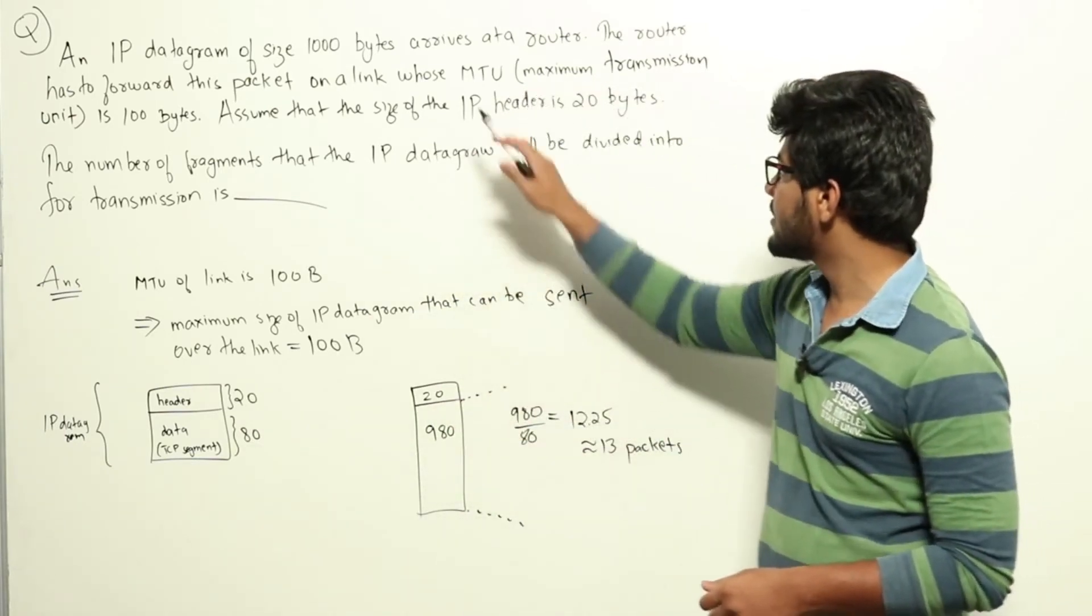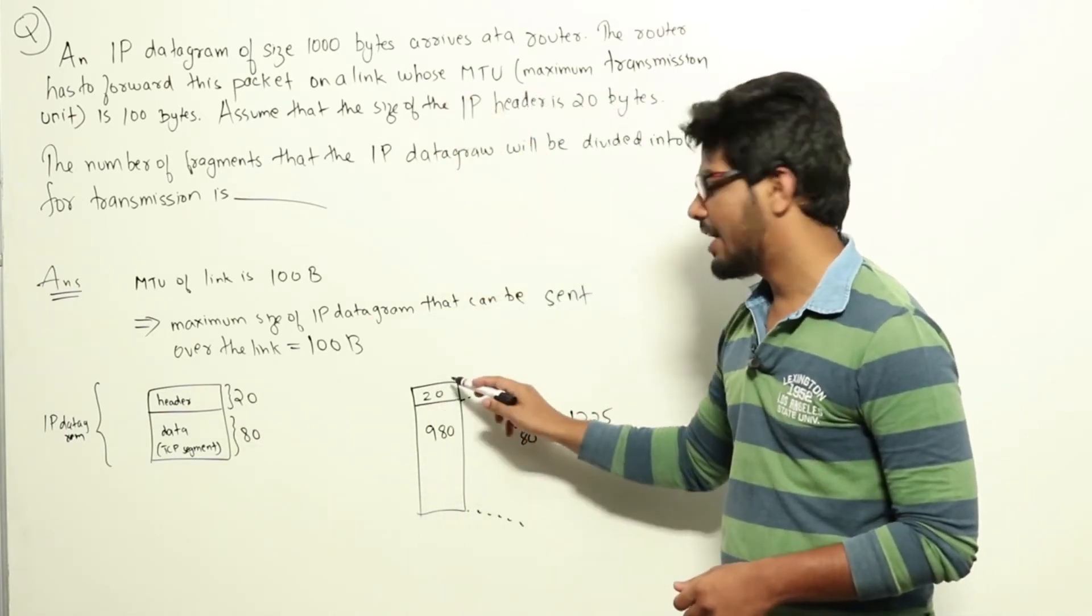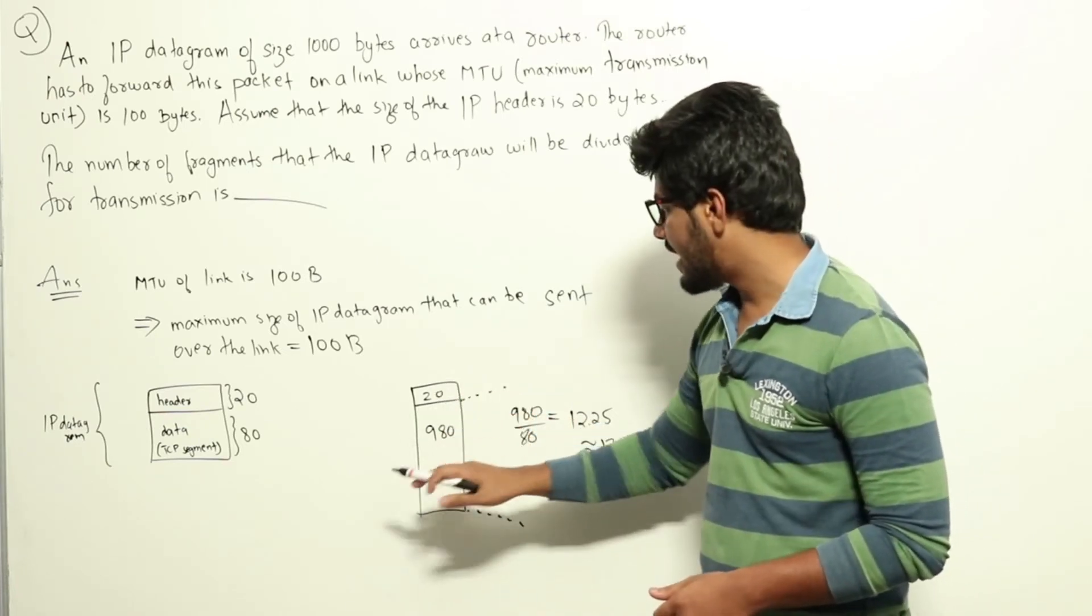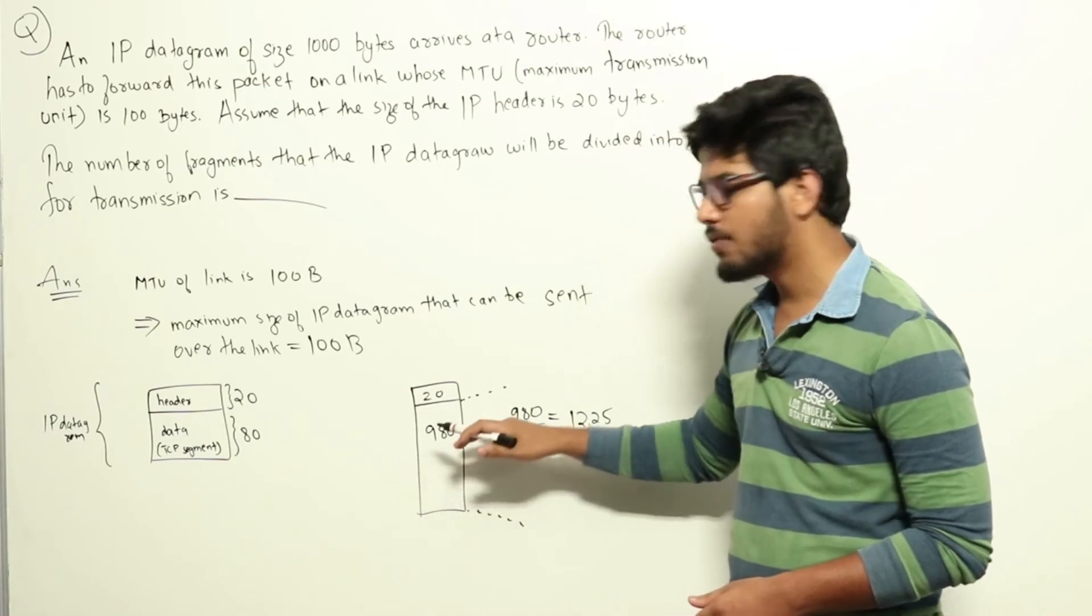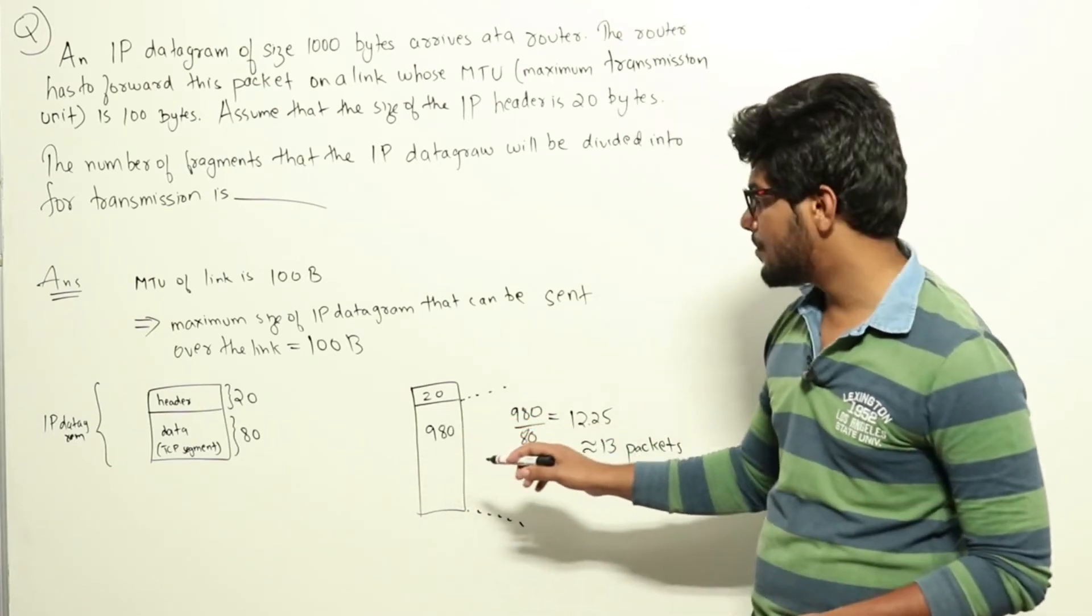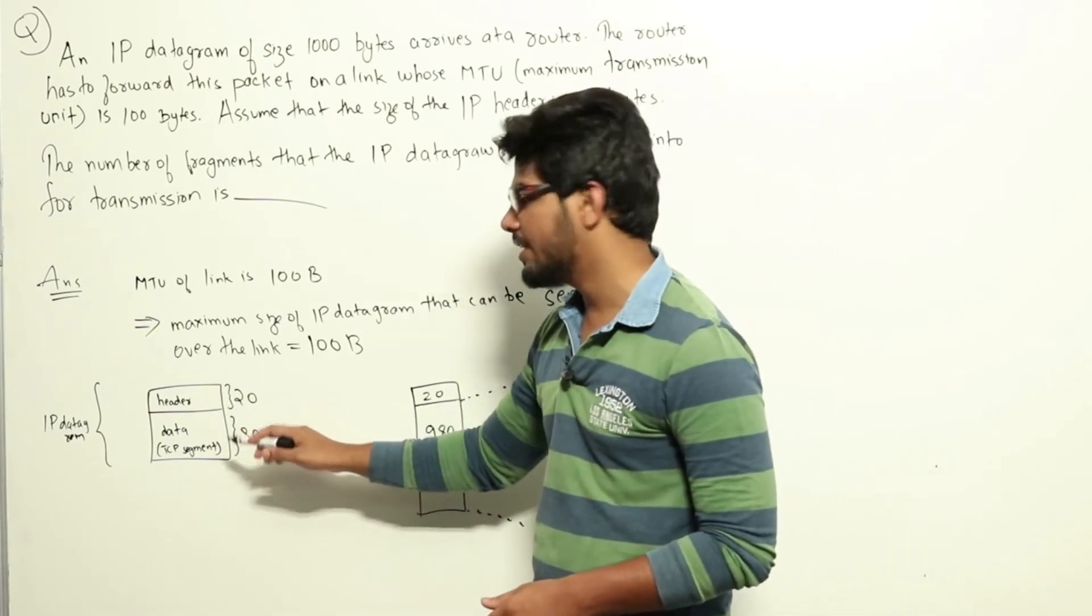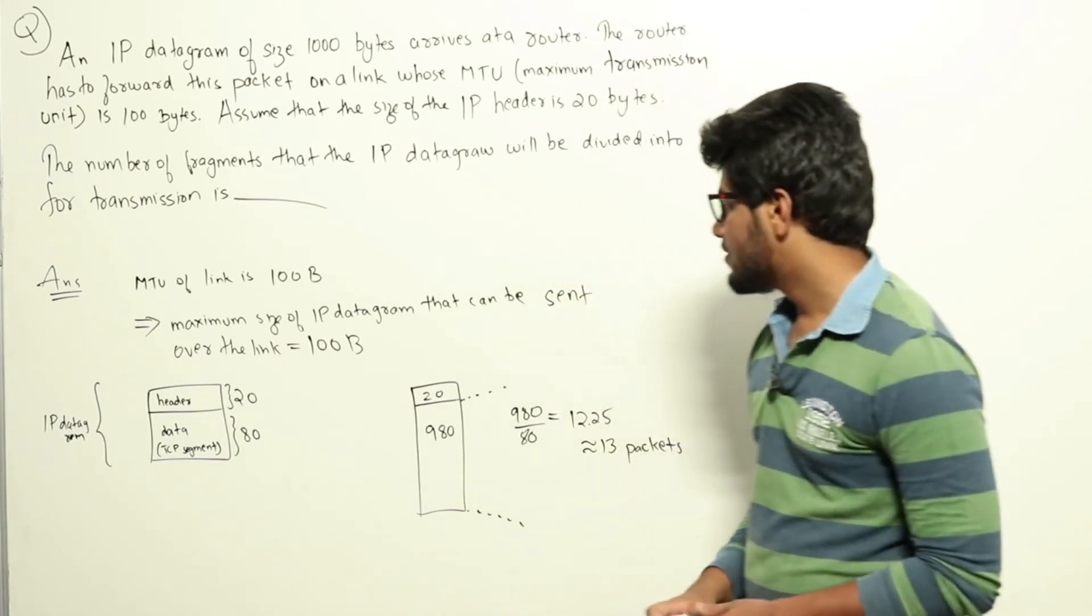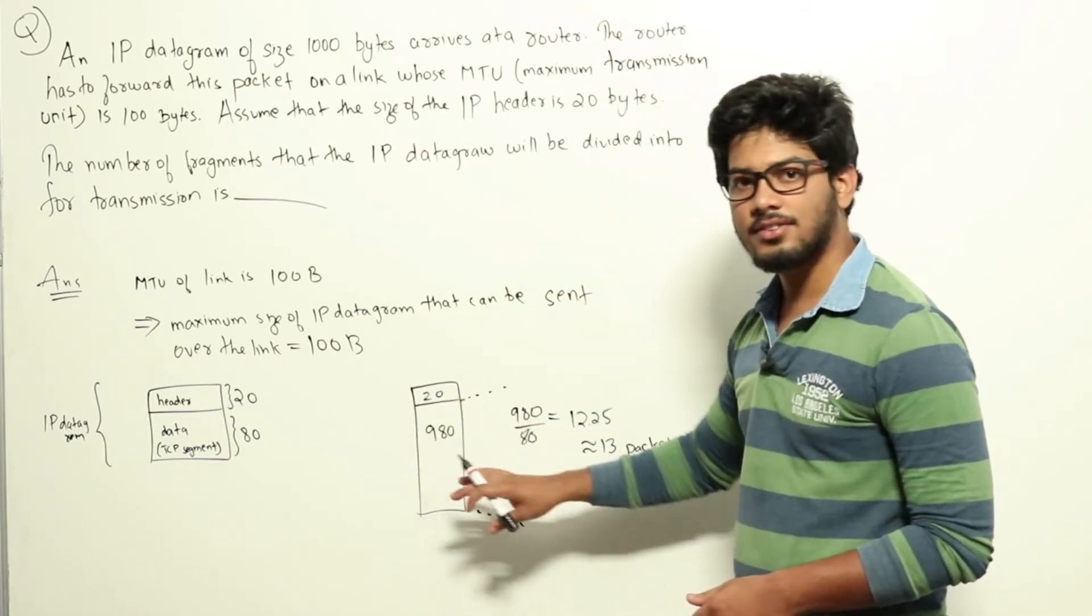The initial packet had a size of 1000 bytes, which means a header of 20 bytes and data of 980 bytes. This data of 980 bytes, we need to divide into smaller packets of size 80 only, 80 because the data part can be 80 only. Each IP datagram will have its own header adding 20 bytes. So this 980, we need to divide into packets of size 80.